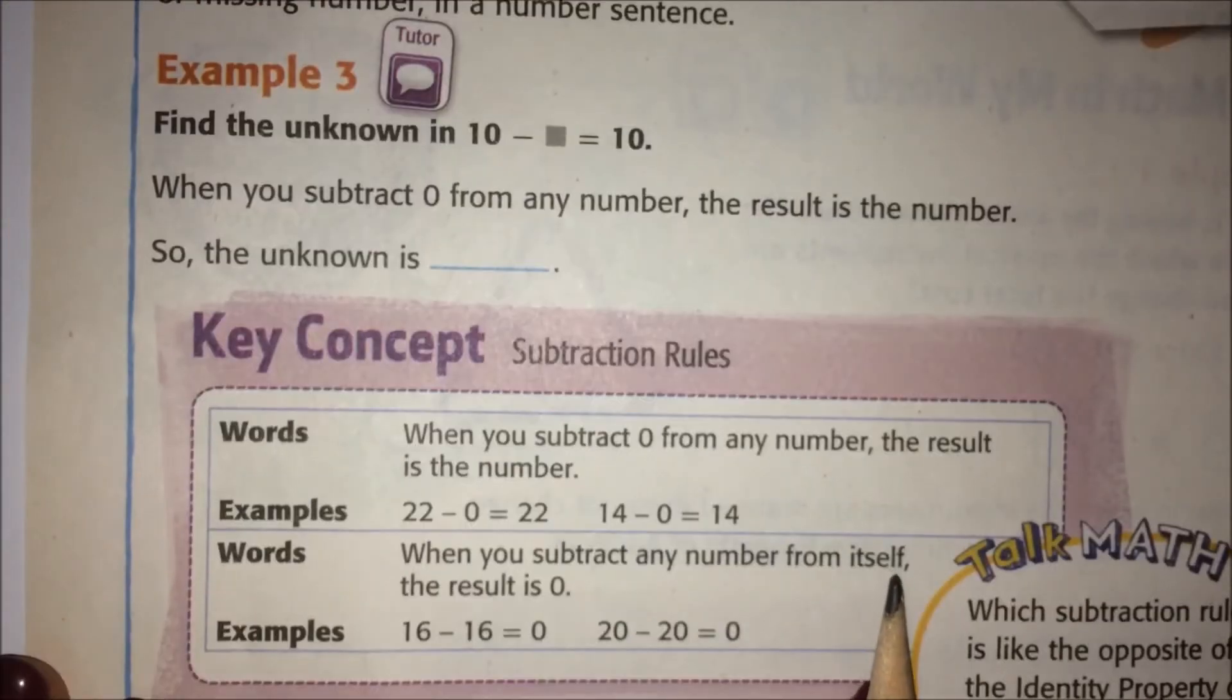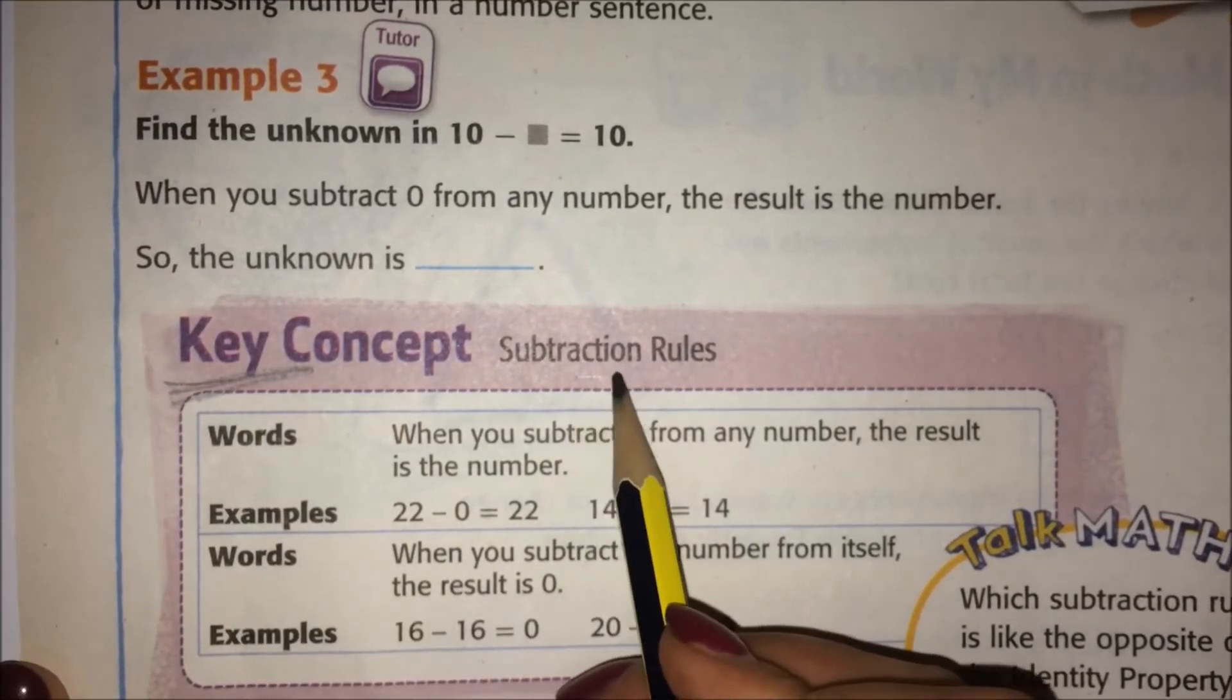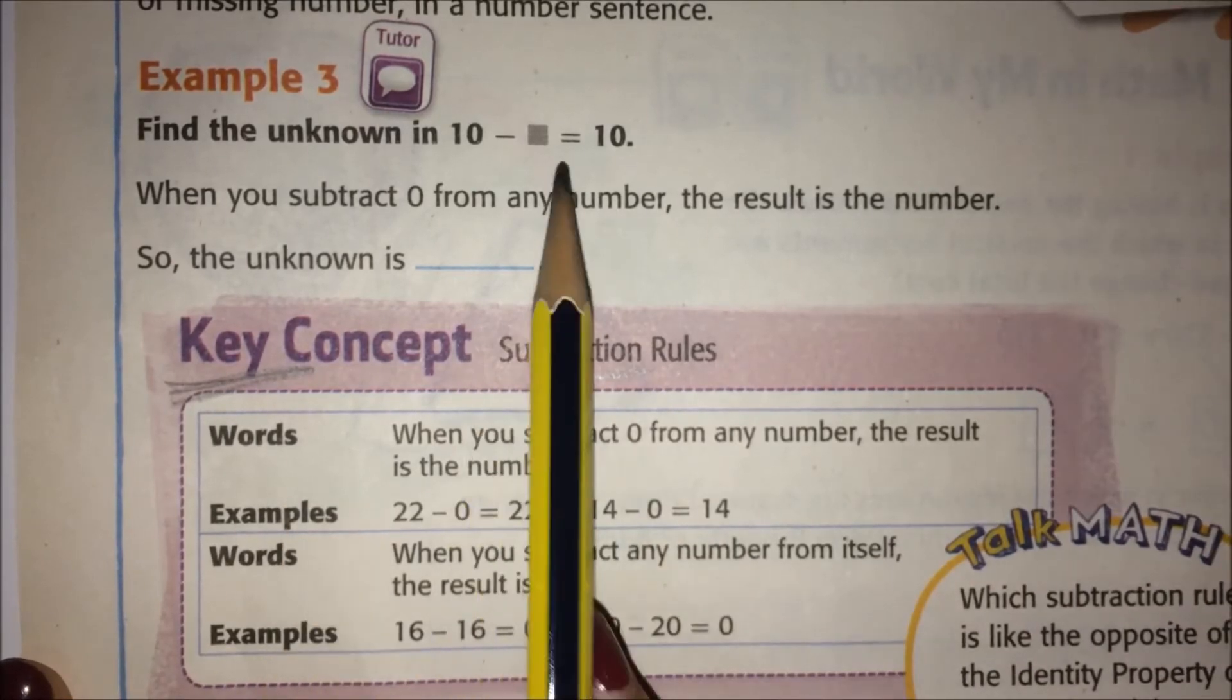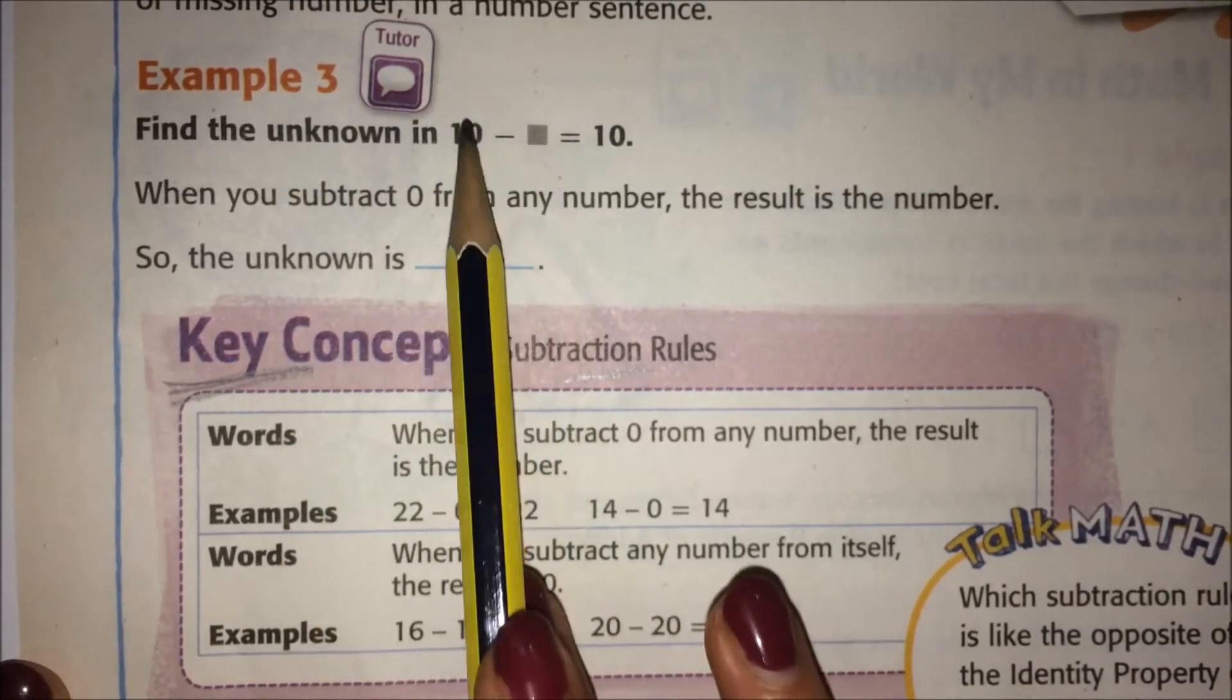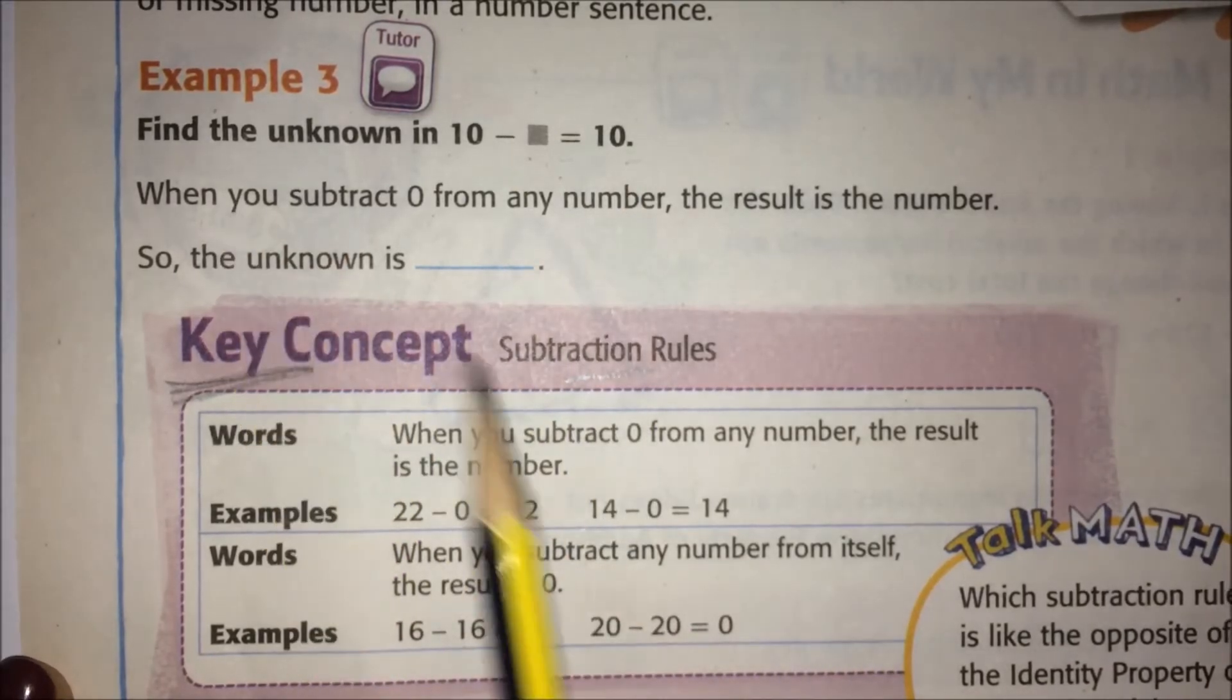You can use properties and rules to find the unknown or missing number in a number sentence. So find the unknown. This is going to be—we have another key concept box, and this one's about subtraction. So we're looking for the unknown. Ten minus blank equals zero. Well, let's look down here.